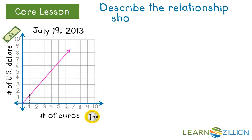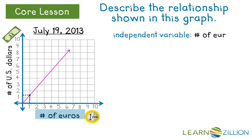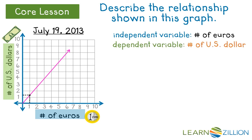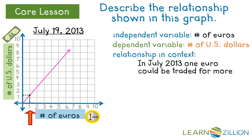Let's see if we can describe some relationships shown in graphs. Take a look at this first graph. The independent variable is the number of euros and the dependent variable is the number of US dollars. What is their relationship in context? Take a look at the title — that's always important — and then it's also helpful to look at what happens when x equals 1, in this case 1 euro. The y value where x equals 1 is between 1 and 2 dollars. So the relationship is: in July 2013, 1 euro could be traded for more than 1 dollar. Notice how we're not just looking at numbers but including all the variables — the euros, the dollars, the date — to give it more meaning.